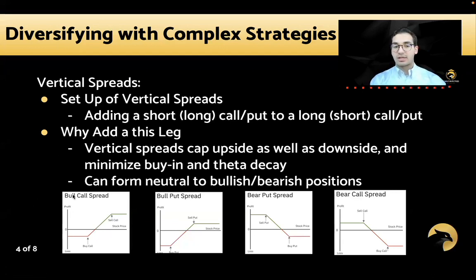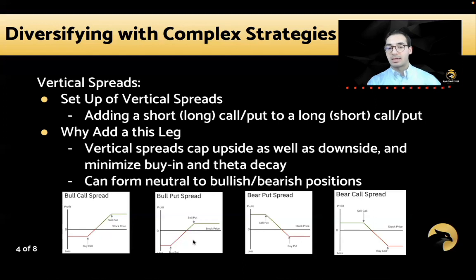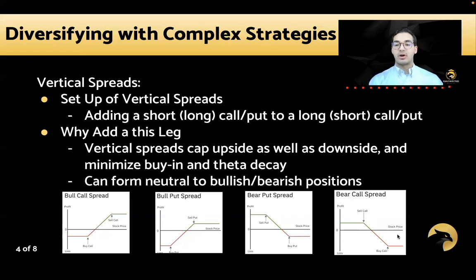A bull call spread — buying the call spread or long call spread — means you buy a call and sell a call, capping upside potential. A bull put spread is a neutral-to-bullish position where you sell a put and buy a put to limit max loss. A bear put spread is like buying a put but selling a put on top to limit max return and minimize buy-in. A bear call spread involves selling the call but buying a call on top, defining risk — making it a great beginner strategy for complex options.